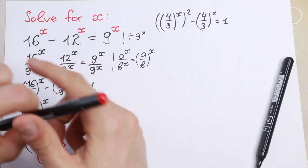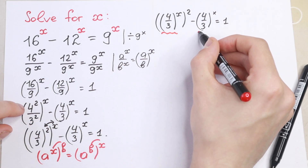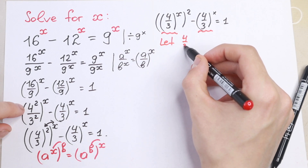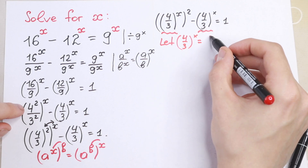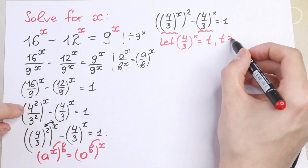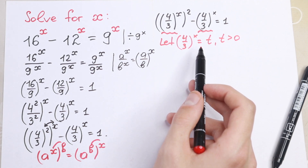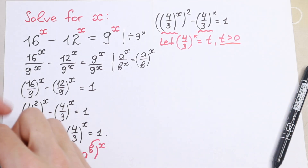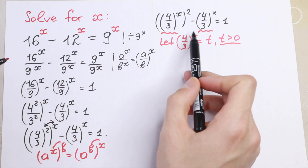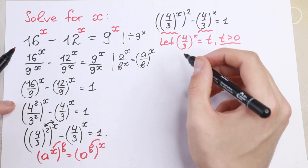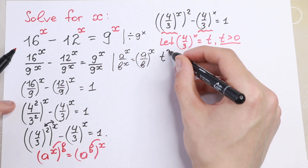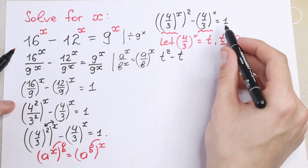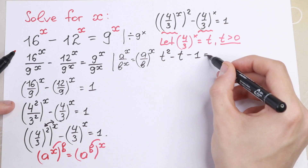Take a look — we have 4 thirds to the power x and 4 thirds to the power x. We can write a substitution: let 4 thirds to the power x equal t, and of course t is positive because this is an exponential function and it cannot take negative values, so t is greater than 0. We then have t squared minus t equal to 1, so t squared minus t minus 1 equal to 0.